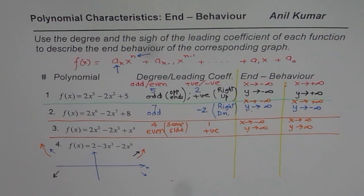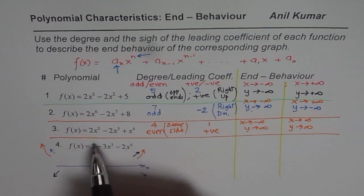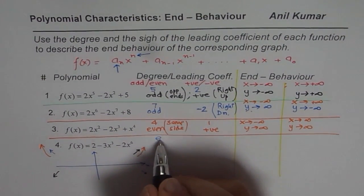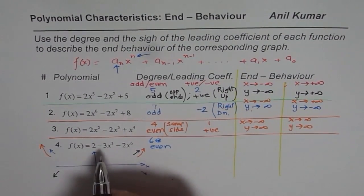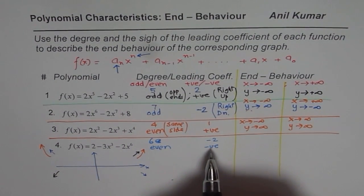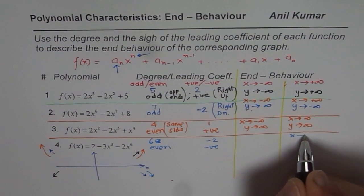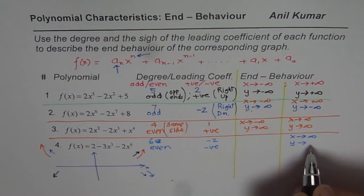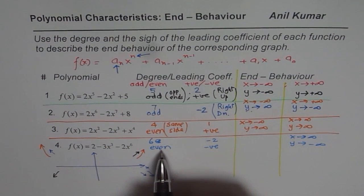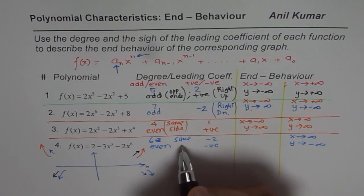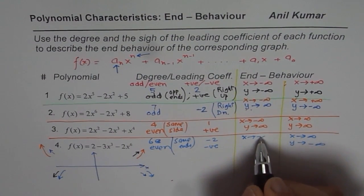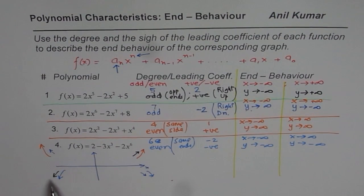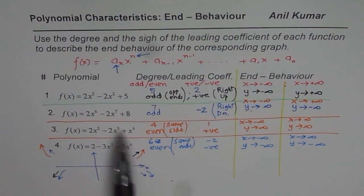For the last one, the degree is 6, which is even. The leading coefficient is −2, which is negative. Negative means 'right side down': when x approaches positive infinity, y approaches negative infinity. Even degree means same ends — so both sides go downward. Therefore, when x approaches negative infinity, y also approaches negative infinity. That is how we can understand end behavior from the given functions.